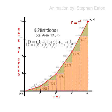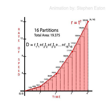Let's do it again. 16 partitions. With 16 partitions, our total area is 19.375, much closer than the estimate from 4 partitions.